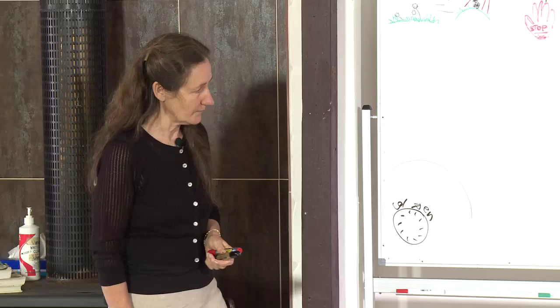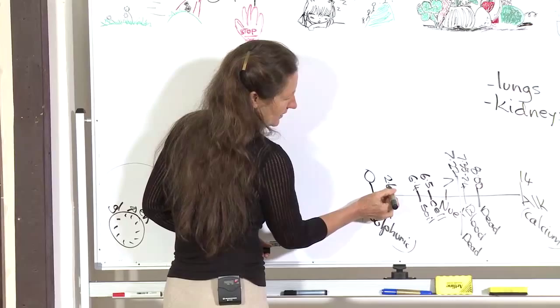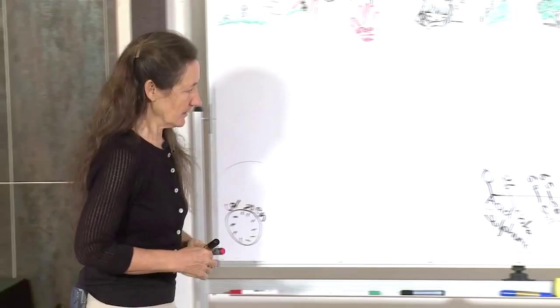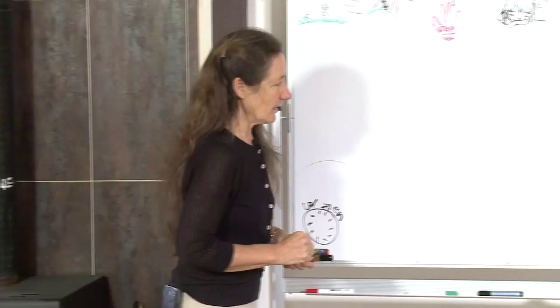Coca-Cola sits at 2.6 on the pH scale — way down at the acid end. It is a killer.